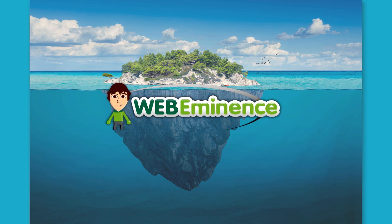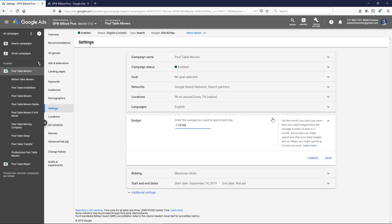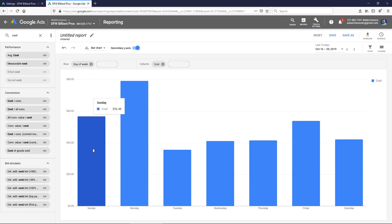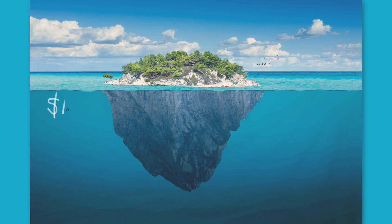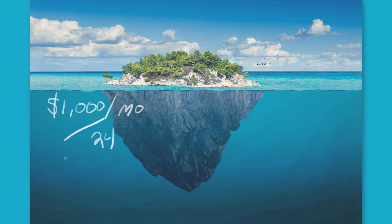Hey, this is Ryan from Web Eminence, and in this video I'm going to cover the issue that many Google Ads advertisers have with small budgets being spread too thin. Let's imagine an advertiser with a budget of $1,000 per month who is only going to advertise on weekdays, Monday through Friday. That means $1,000 divided by 24 weekdays in the month comes to about $42 per day for the entire account. With two campaigns, that's actually $21 per campaign per day.